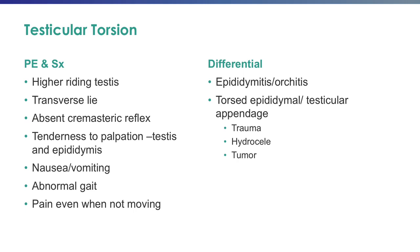On examination of the scrotum, with torsion the testis itself is tender and may also involve the epididymis, in contrast to epididymitis where the child will often point to the upper part of the scrotum as the area of tenderness. Associated nausea or vomiting is commonly seen with testicular torsion and is far less frequent with epididymitis. The child's gait may be affected with both epididymitis and testicular torsion; they tend to walk with a broad-based gait because the pain is worse when something is touching the area.